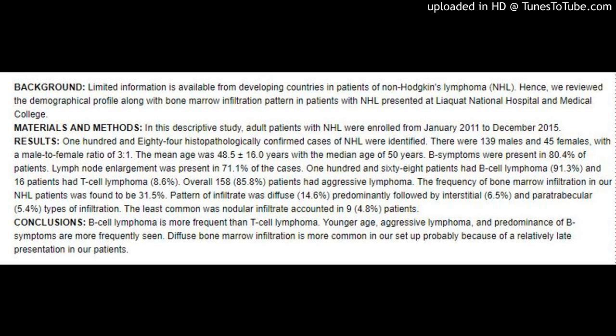16 patients had T-cell lymphoma (8.6%). Overall, 158 patients (85.8%) had aggressive lymphoma. The frequency of bone marrow infiltration in NHL patients was found to be 31.5%. Pattern of infiltrate was diffuse (14.6%), predominantly followed by interstitial (6.5%), and paratrabecular (5.4%) types. The least common was nodular infiltrate, accounting for 9 patients (4.8%).